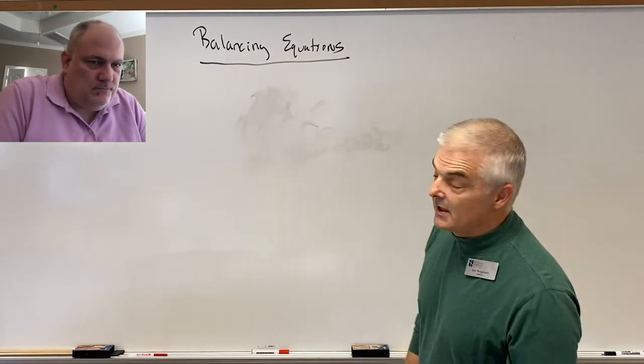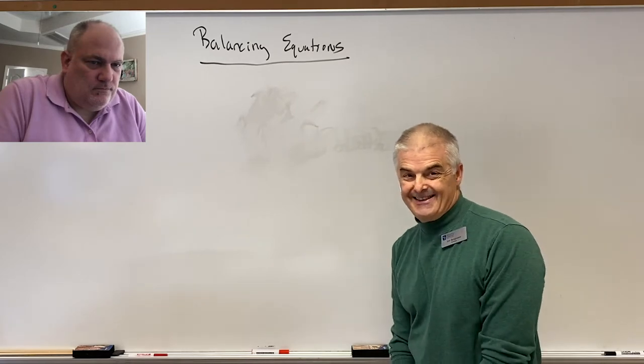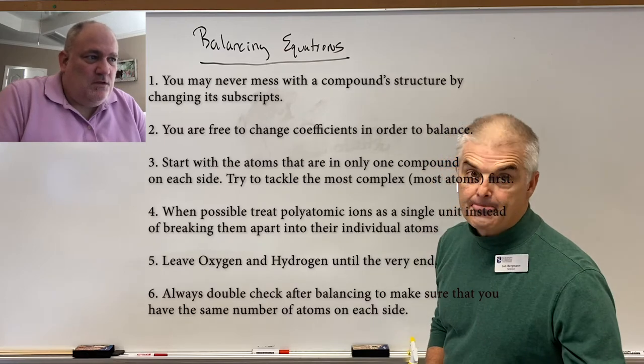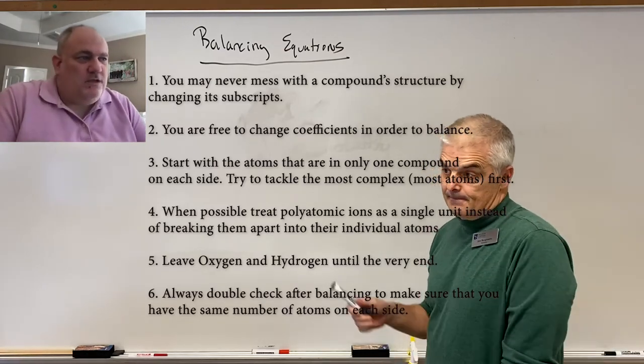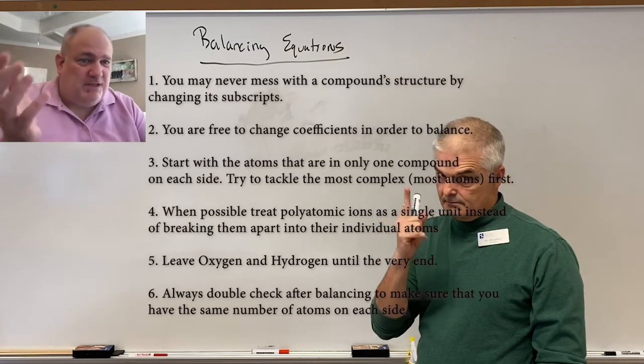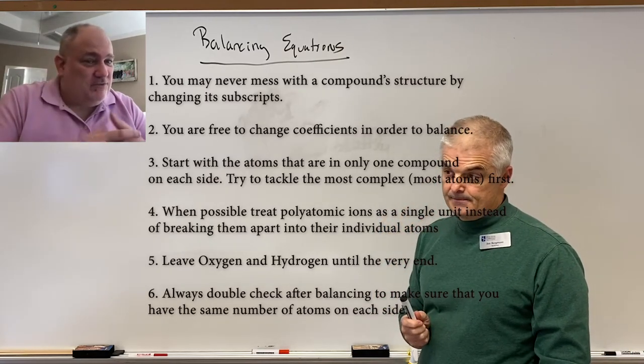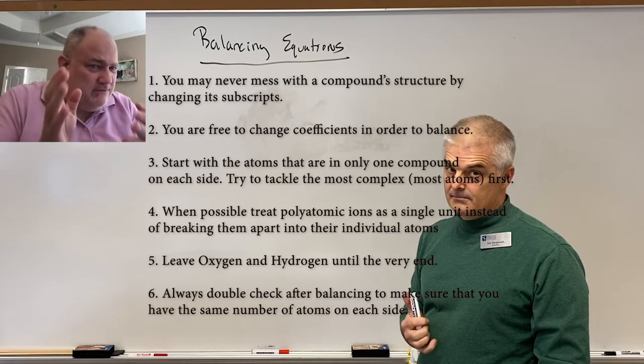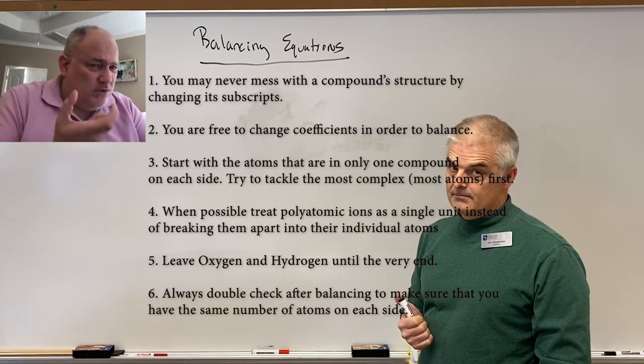Or if I've got PbOH4, some kind of lead four hydroxide, I'm allowed to change only the number in the front. And that could be a one, a two, a three, it could be a 24. This is the number that you can change when you're balancing the equation. That's the coefficient. So rule number one is no touchy the subscripts, only the coefficients. What are the other rules? Well, as you take a look here, we typically want to start with things that only appear once on each side, because that allows us to balance them off pretty easily. The other thing that's kind of tricky and is really helpful is instead of breaking apart each polyatomic ion into individual atoms, we can treat them as whole units.